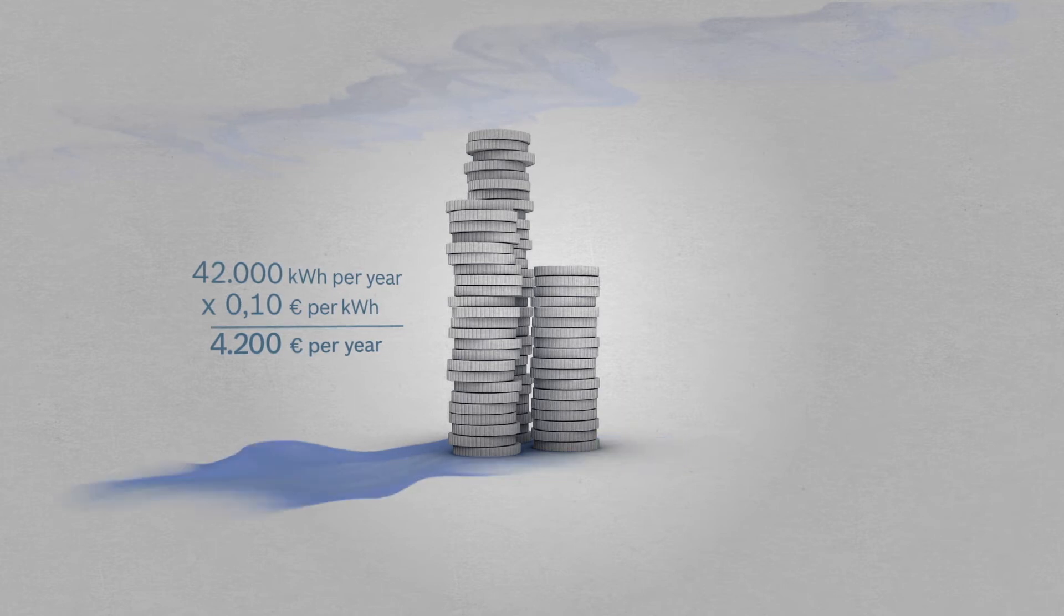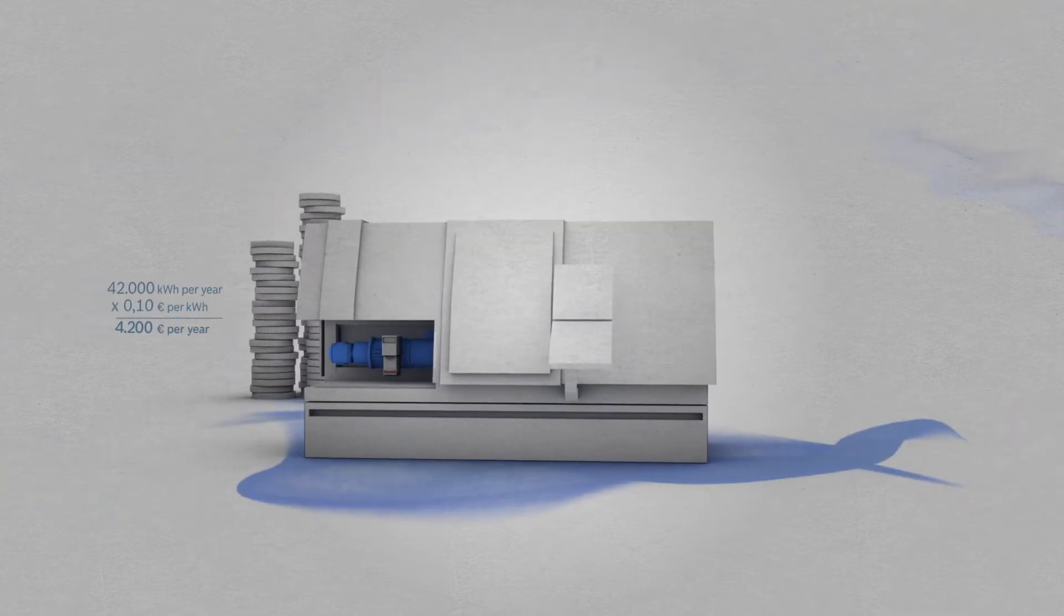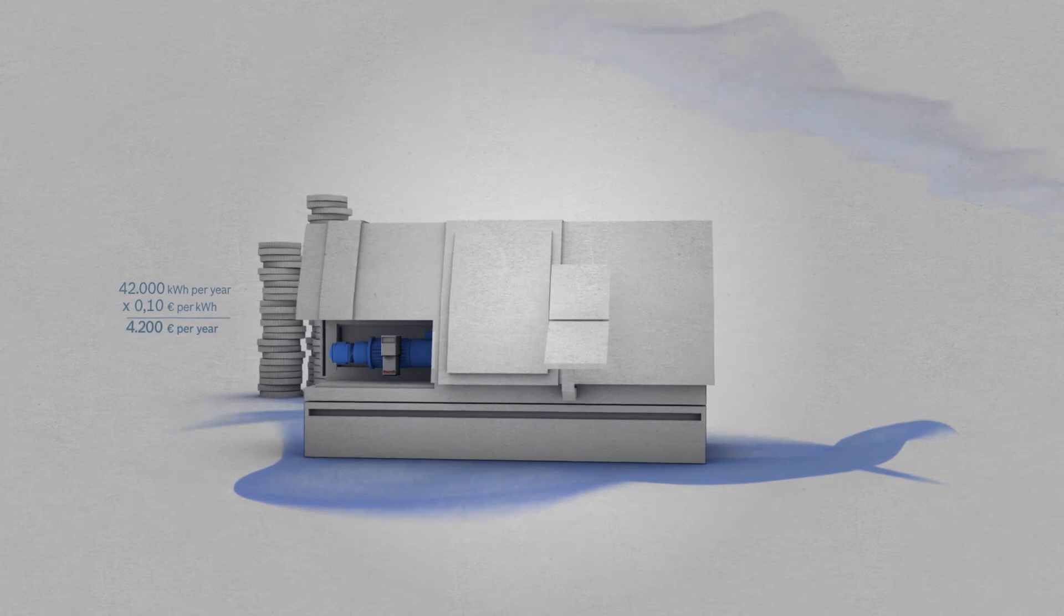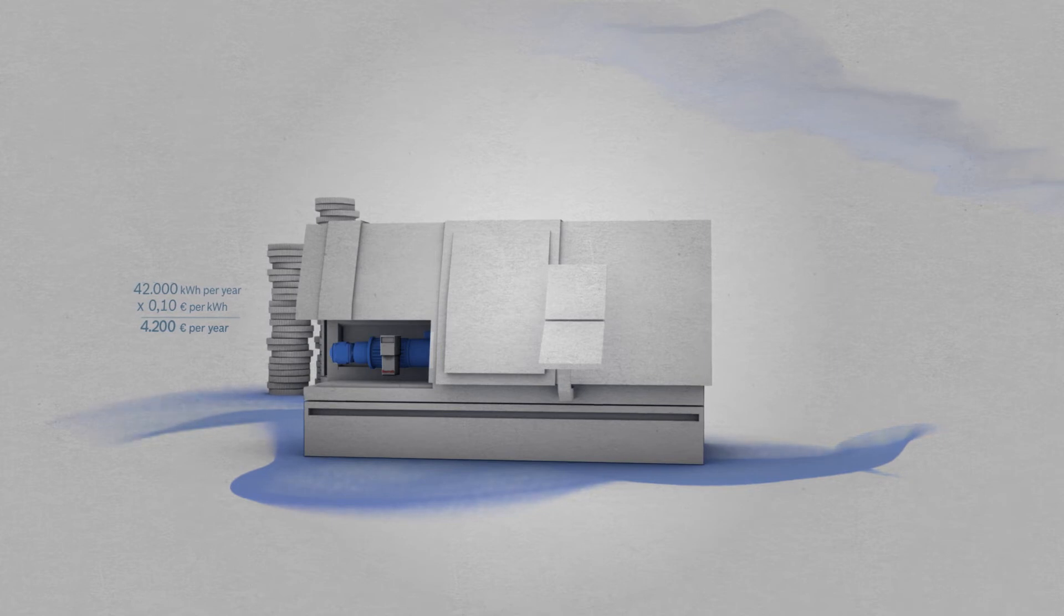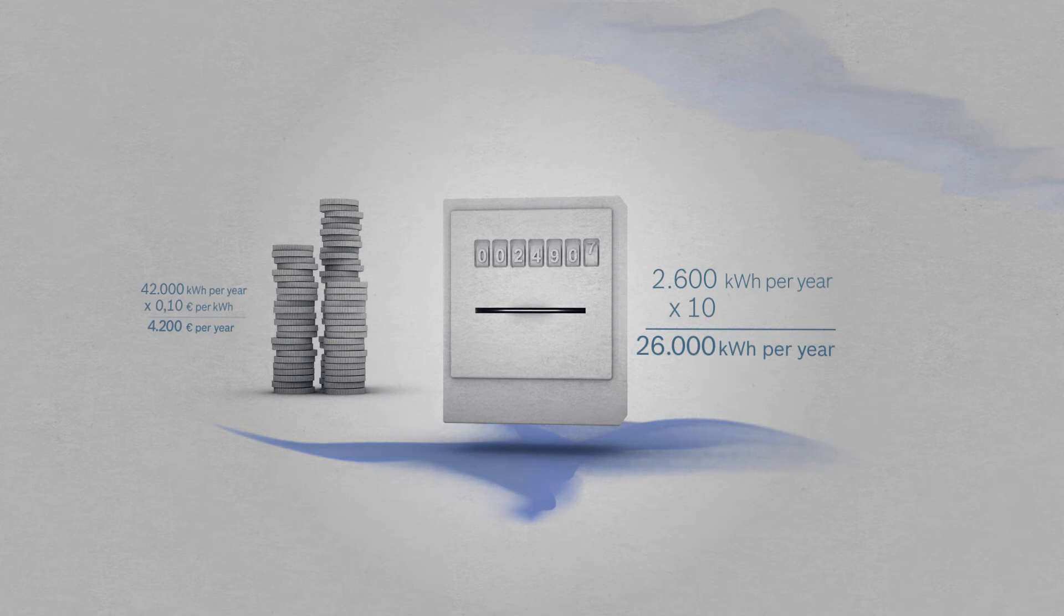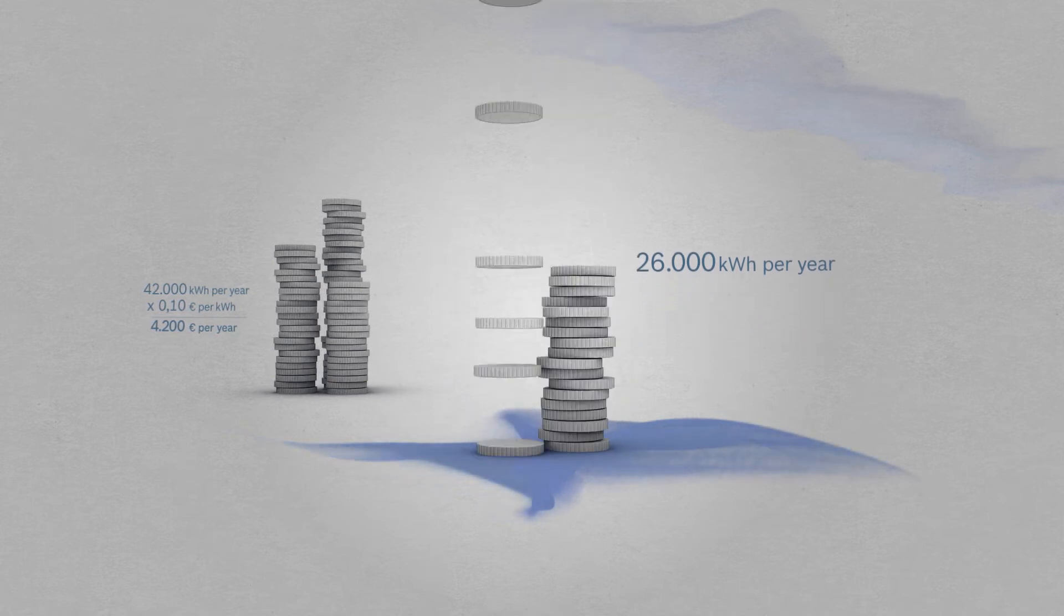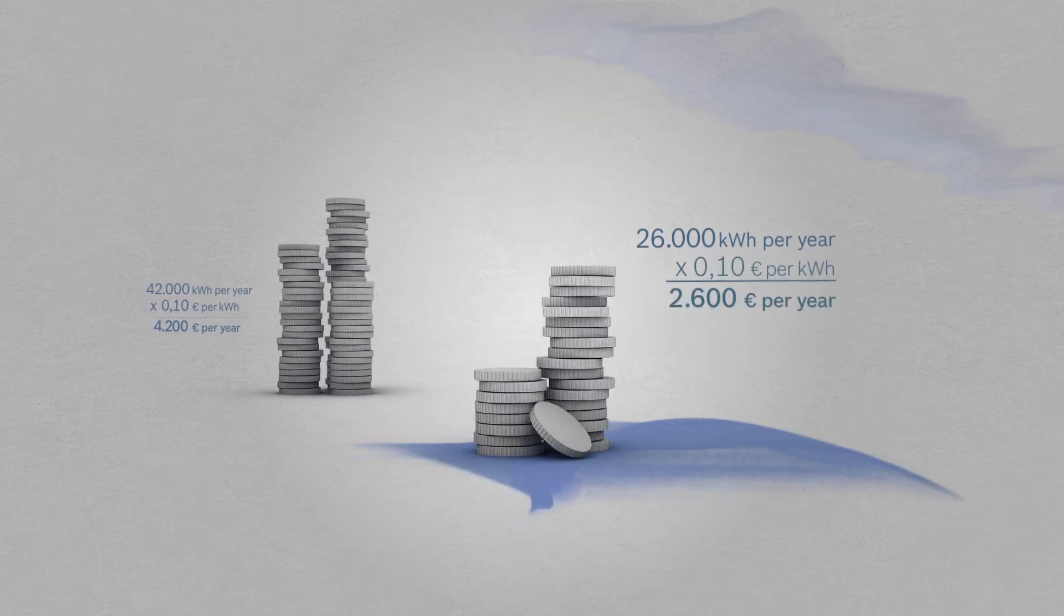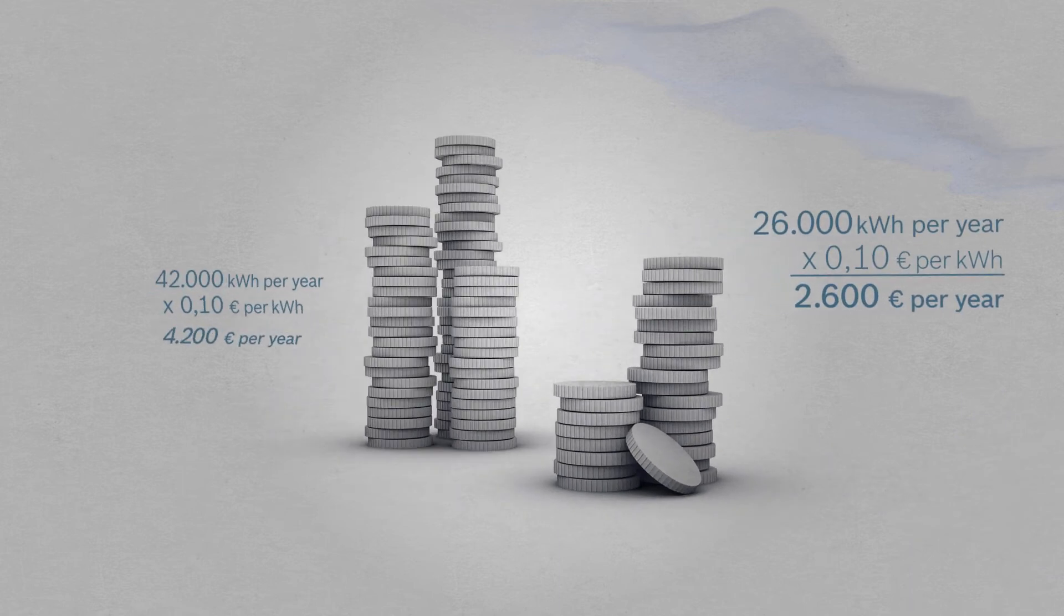Now imagine that your lathes have been enhanced and are now equipped with our variable speed pump drives. One machine would then require only 2,600 kilowatt hours per year. For 10 machines, this amounts to 26,000 kilowatt hours and the significantly lower cost per year of 2,600 euros.